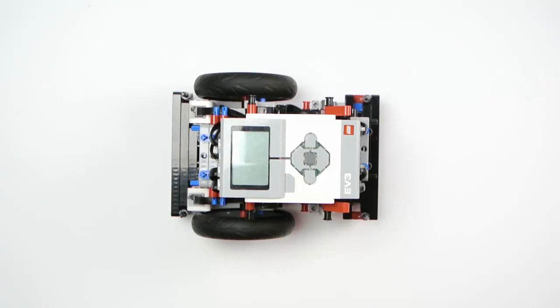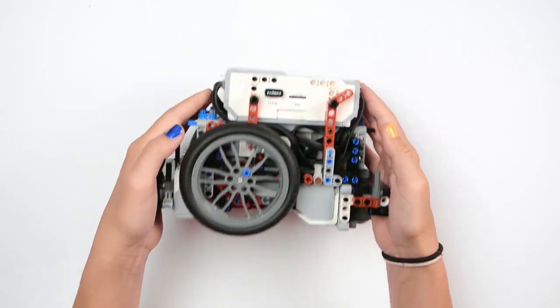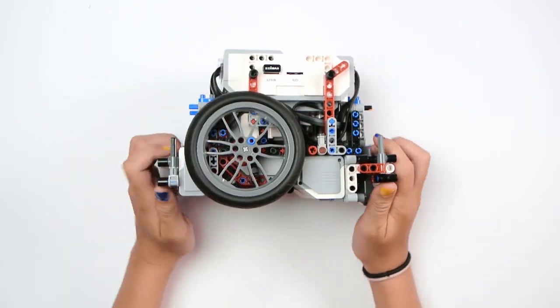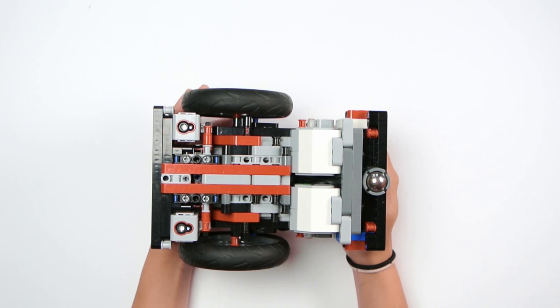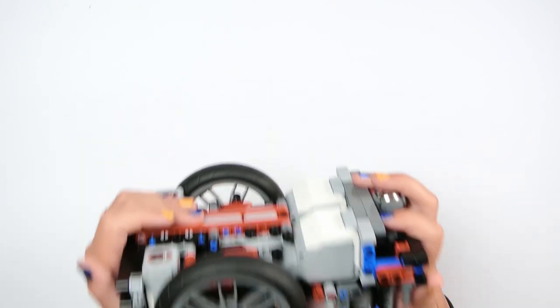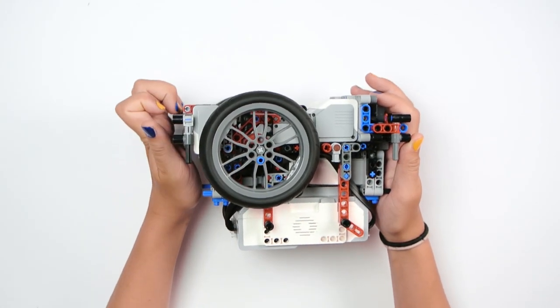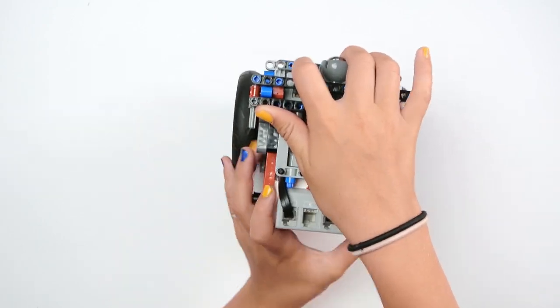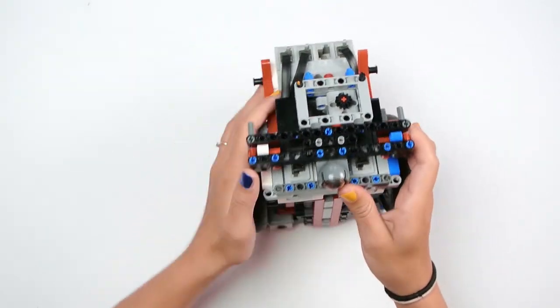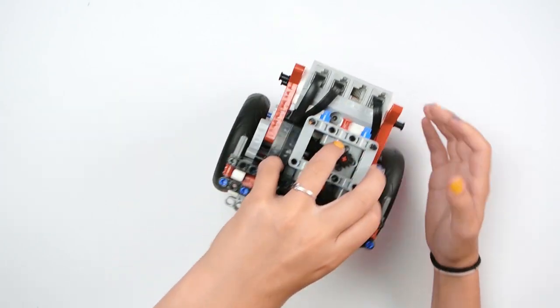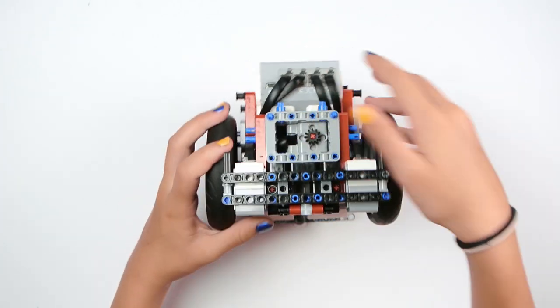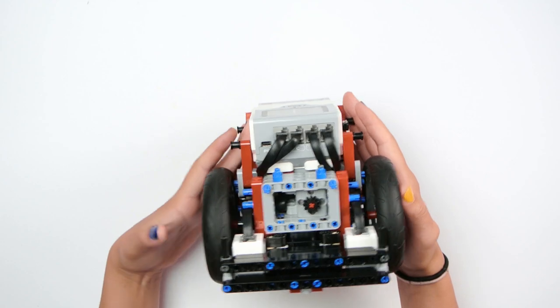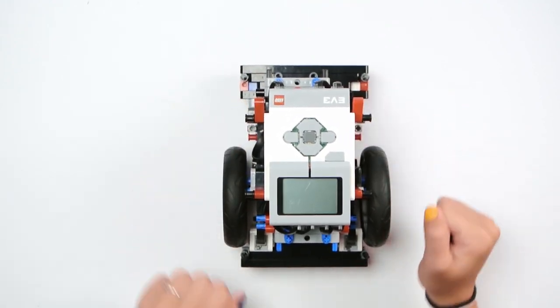Let's take a look around the robot. This is the side view. This is the bottom view. This is another side view. This is the back view. This is the front view. And this, of course, is the top view.